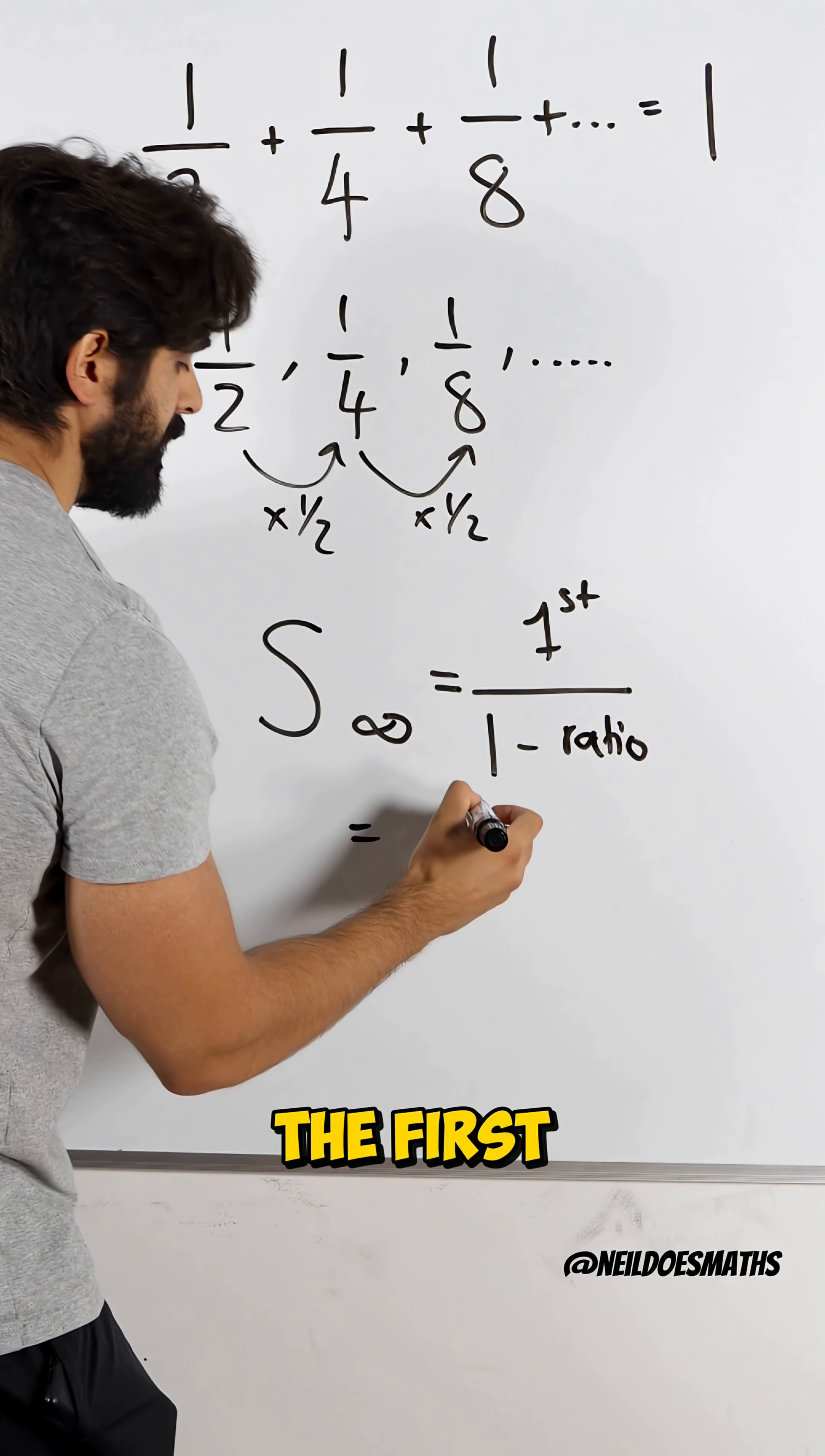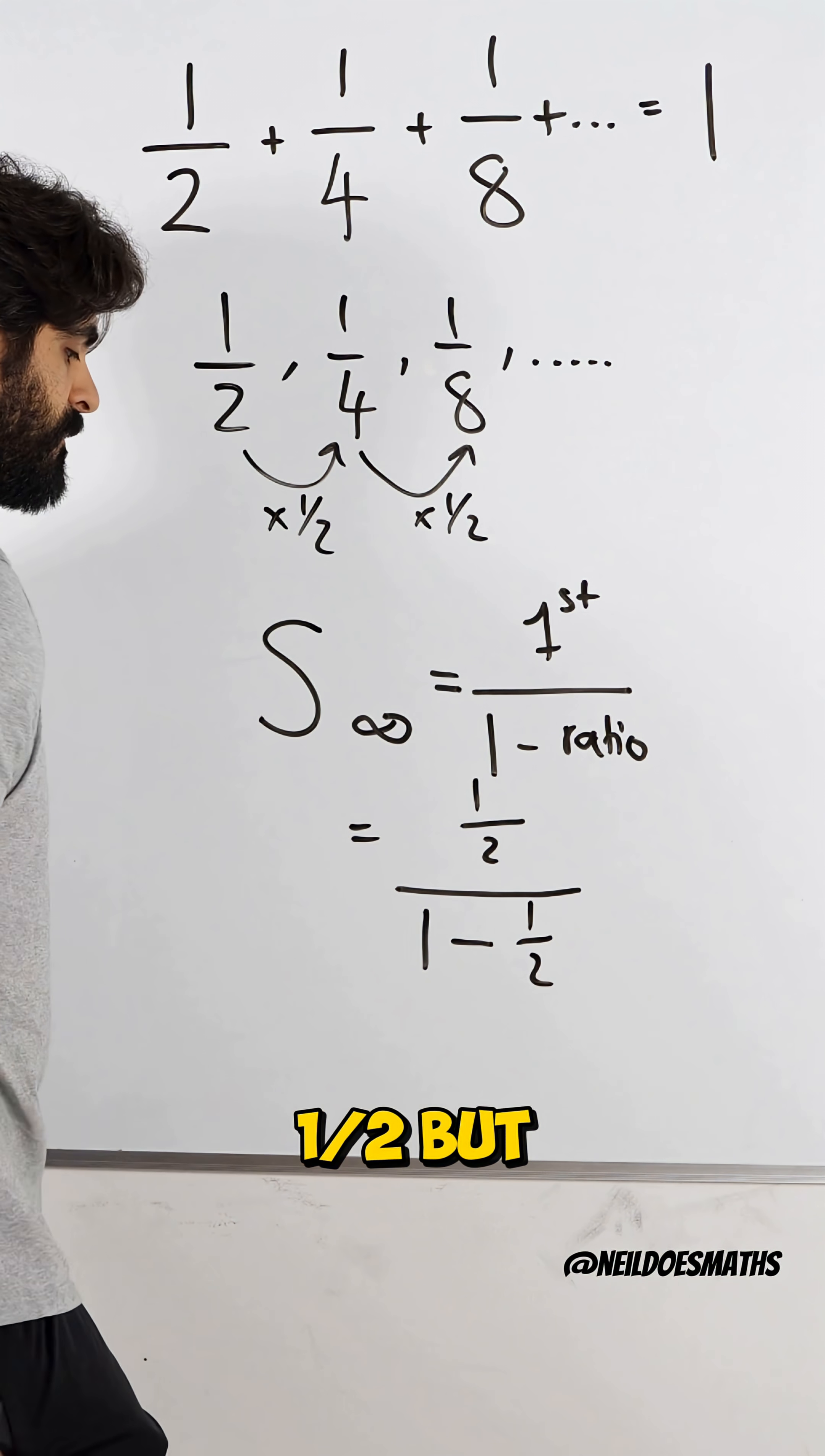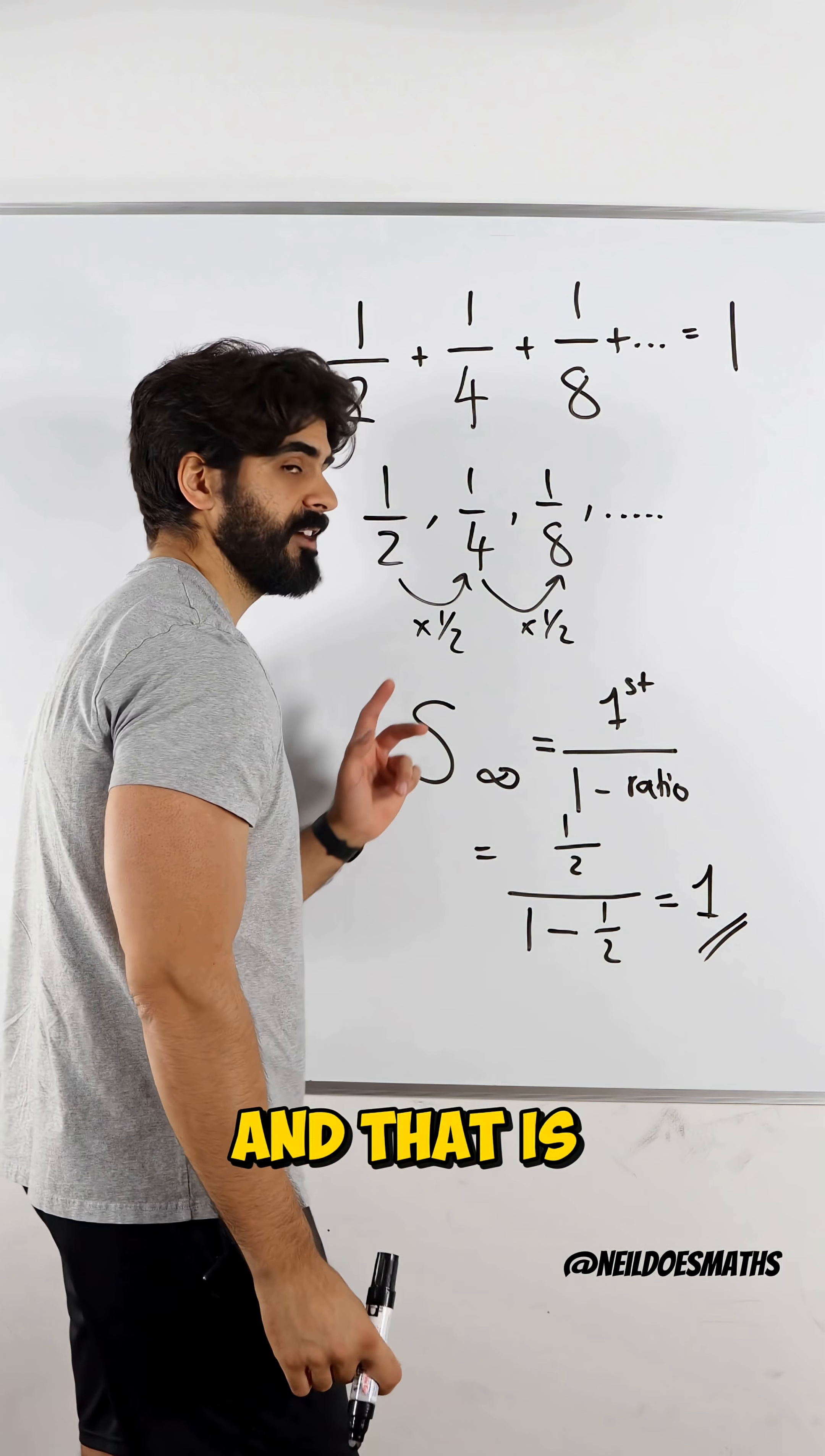In our case, the first term is one half. And we're going to divide that by one minus our common ratio, which is a half. But one minus a half is a half. And we're doing a half divided by a half, which is uno. And that is now shown.